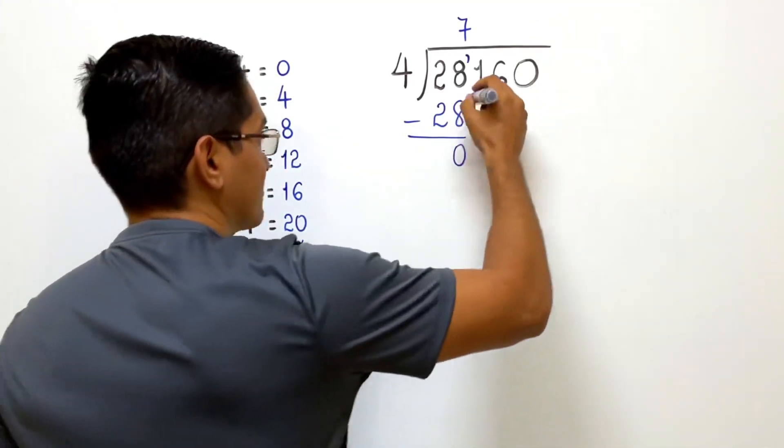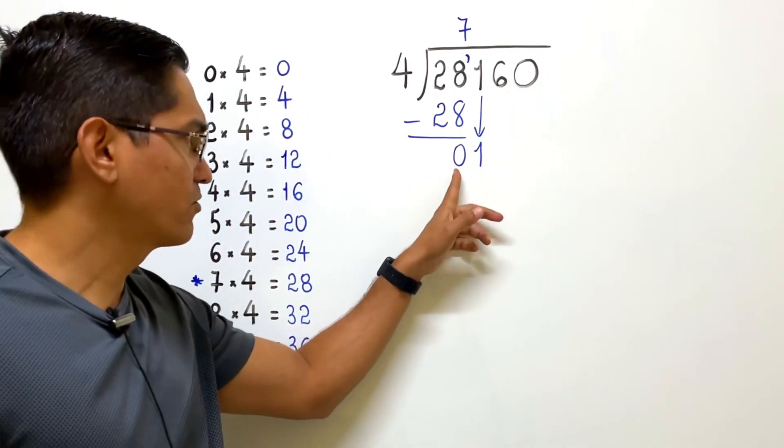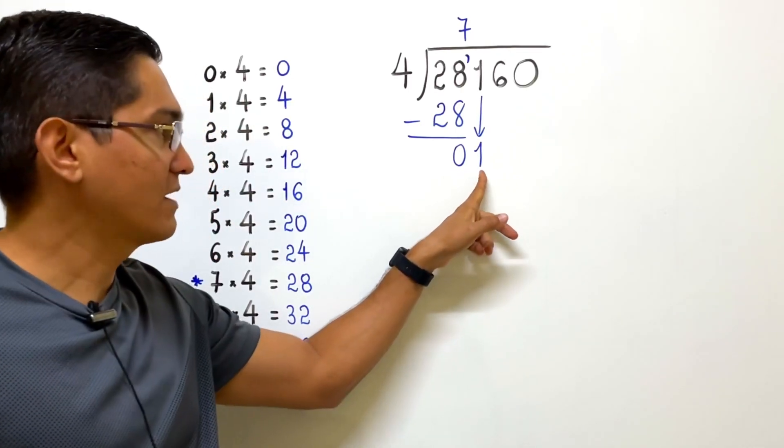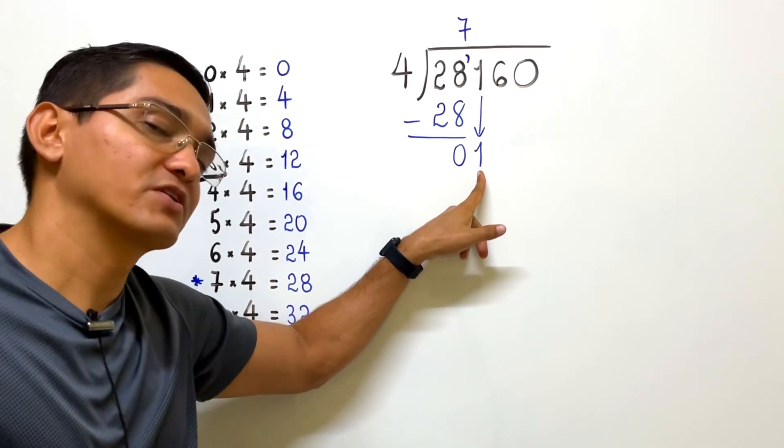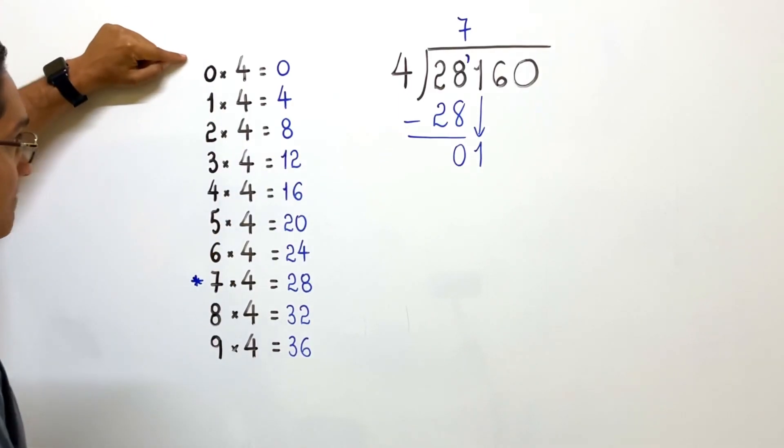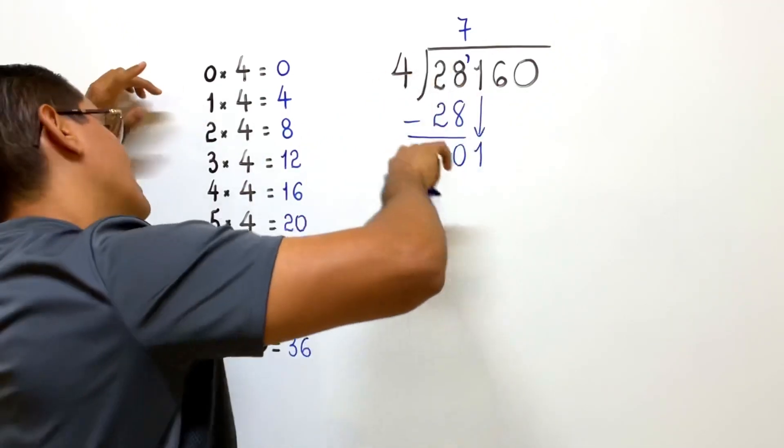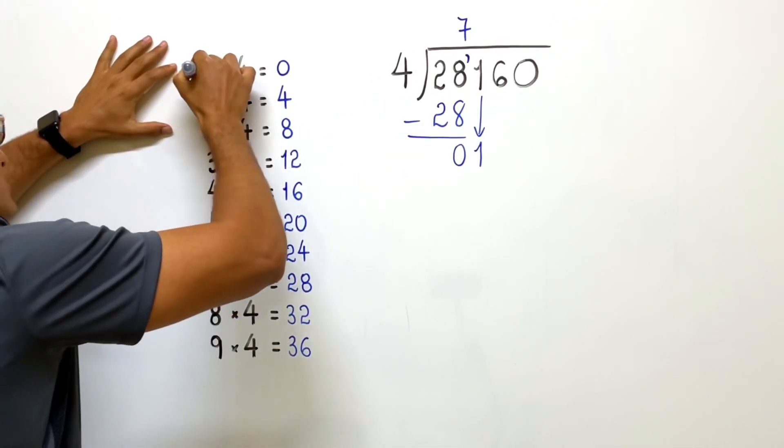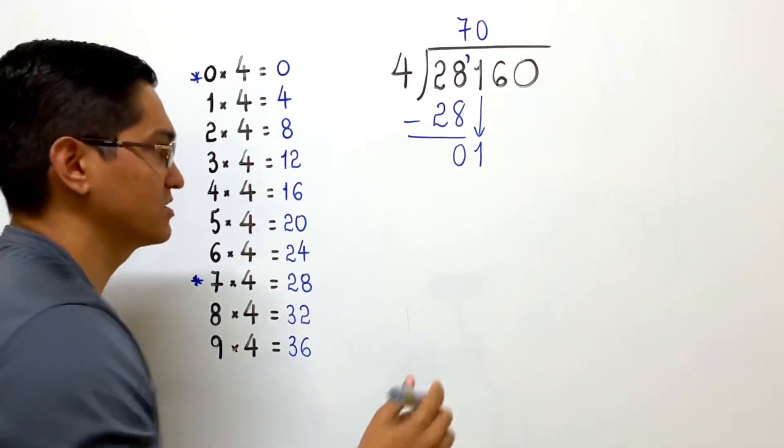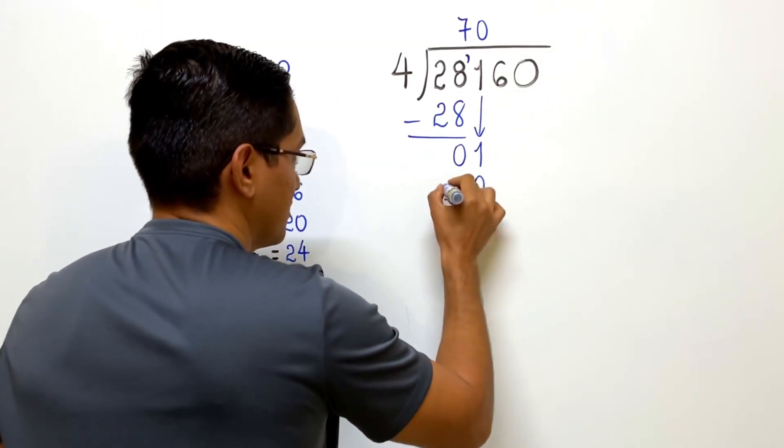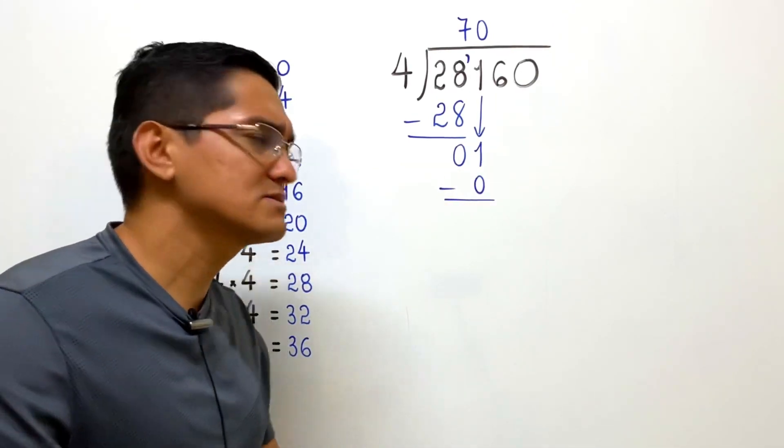Next step is we bring down the next digit. It is 1. So now we have 01. You can forget about the 0 here, think only about the 1. What number do I multiply by 4 to get almost 1 or 1, but not more than 1? You will take a look at the multiplication table. You will realize that 1 times 4 is already 4, which is way more than 1. So we stick with 0. We write 0 here. What is 0 times 4? It's 0. So I write 0 here. And then we do a subtraction. 1 minus 0 is still 1.